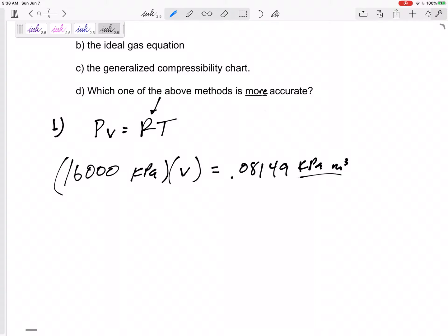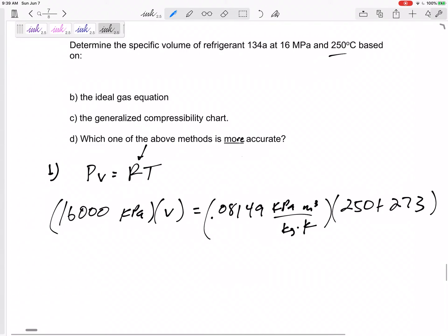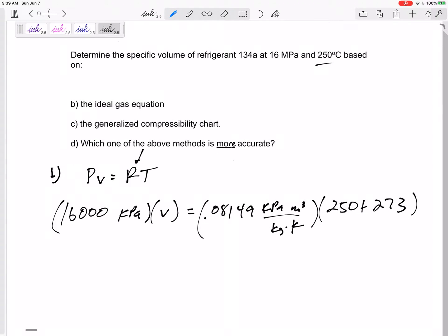Here we go: 0.08149 kPa meters cubed per kilogram K times the temperature. What's the temperature? 250. Can I just plug in 250? Hopefully that K gave you a reminder—this has to be absolute temperature in these ideal gas equations. So 250 plus 273. So there's the temperature, 523 Kelvin. And then solve for specific volume: 0.00266 meters cubed per kilogram. So that's part B.